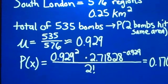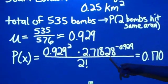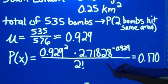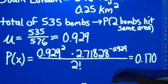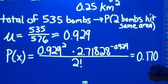To find the probability, we just plugged the mean and the number of occurrences into the function to find the answer of 0.170.